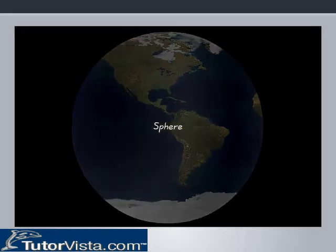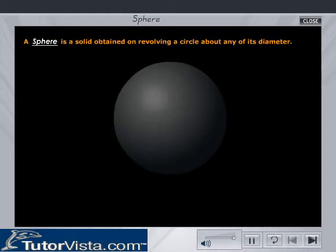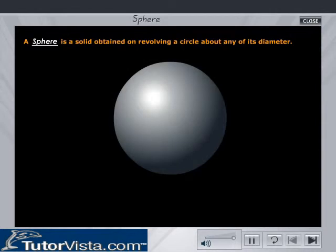Sphere. A sphere is a solid obtained on revolving a circle about any of its diameter.